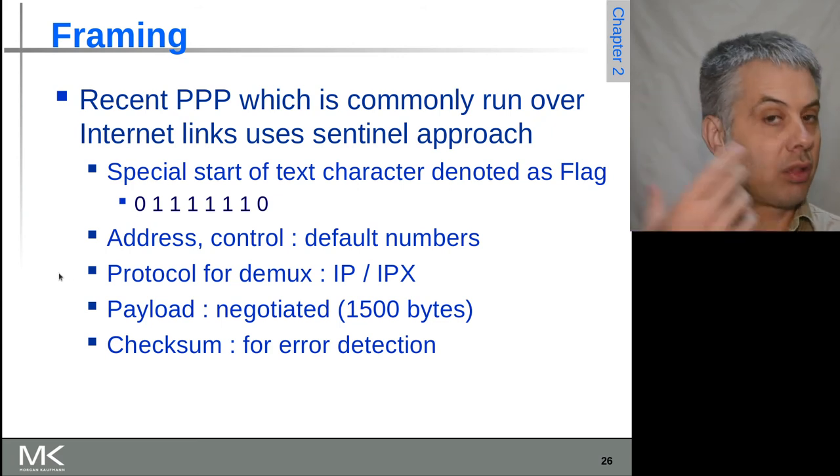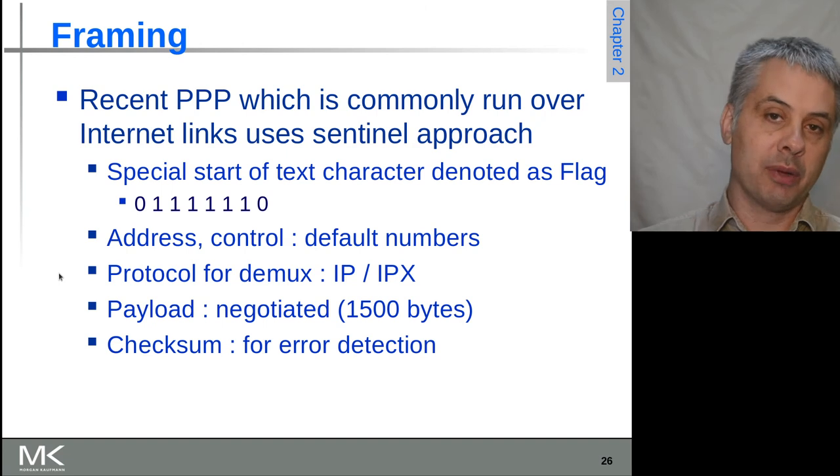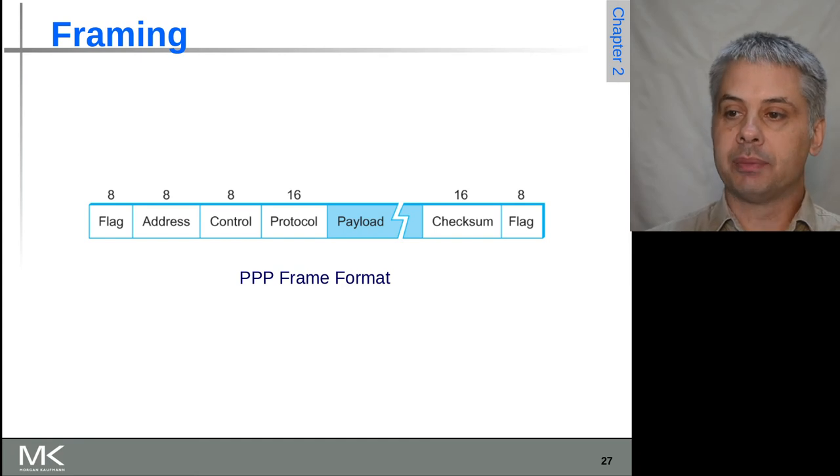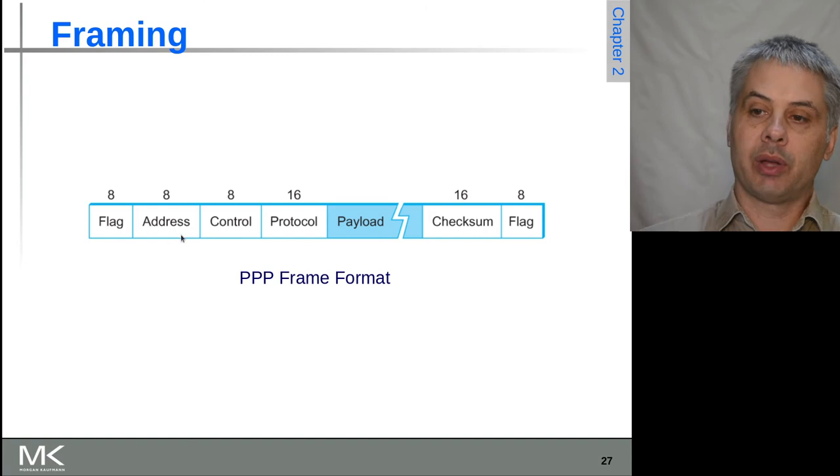But it's satisfying the same fundamental need, turning a bit stream or a byte stream into a frame stream for the next layer up. So for PPP, we have that flag byte, we have the address and control and protocol information, variable length payload, we have a checksum, and then the flag again at the end to mark the end of that.